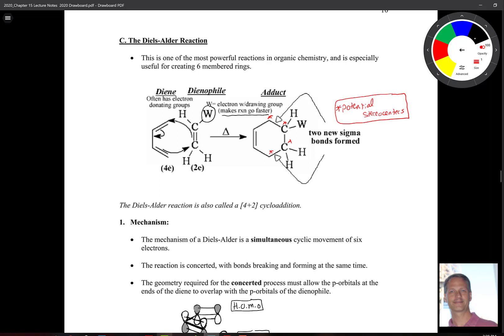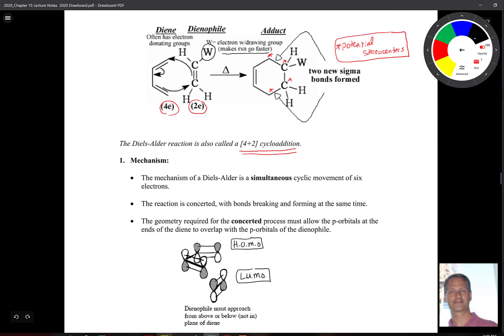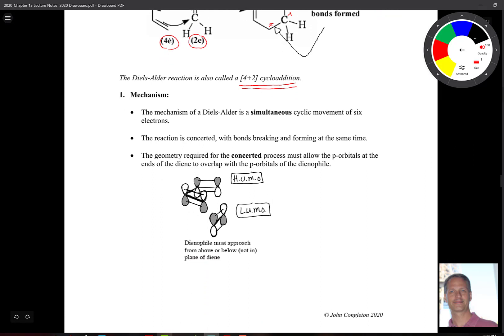This reaction is also classically known as a four plus two cycloaddition. That's because you're adding four electrons and two electrons. When we're talking about those electrons, we're talking about the electrons of the alkene. The mechanism of this is interesting. Even though it's one step, it's one of the reactions that we're going to see this semester that gets involved into looking at orbitals a little bit more. So I'll put this picture together here for you.